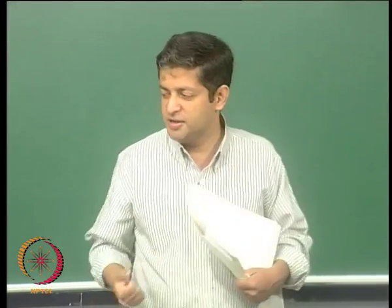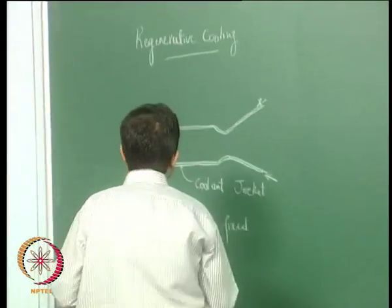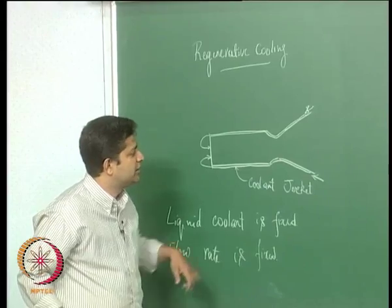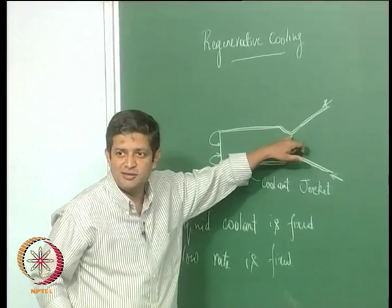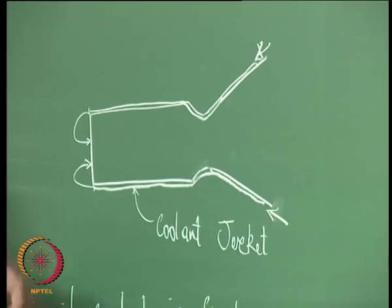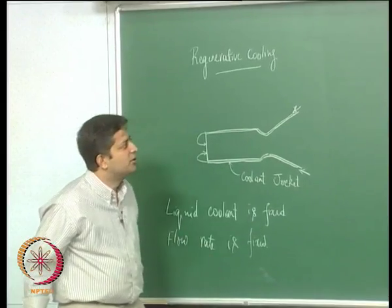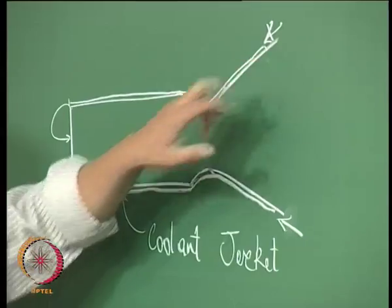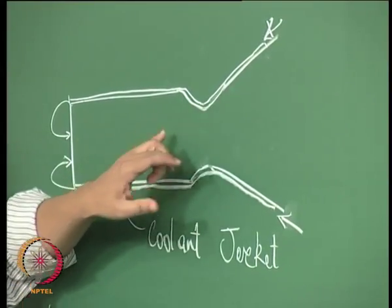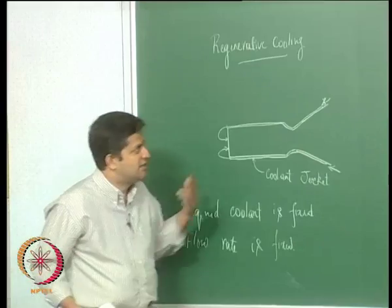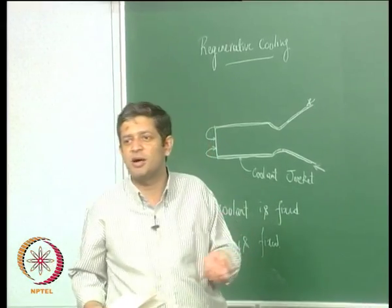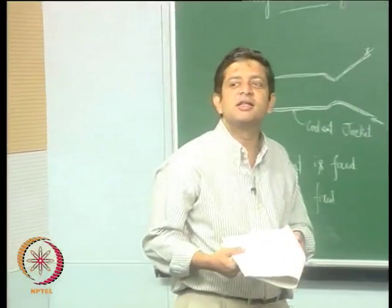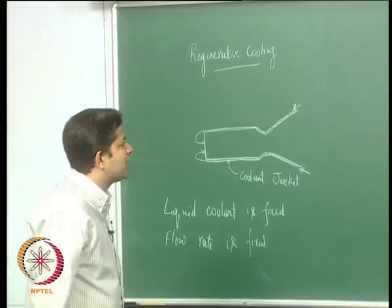The heat flux from the gas phase side is maximum at the throat, so you need to ensure this region is cooled appropriately — otherwise the heat coming in could damage it. In addition, the heat transfer coefficient Hg varies along the nozzle: it is a maximum at the throat and decreases on both sides. You have to keep that in mind and also understand how coolants behave.